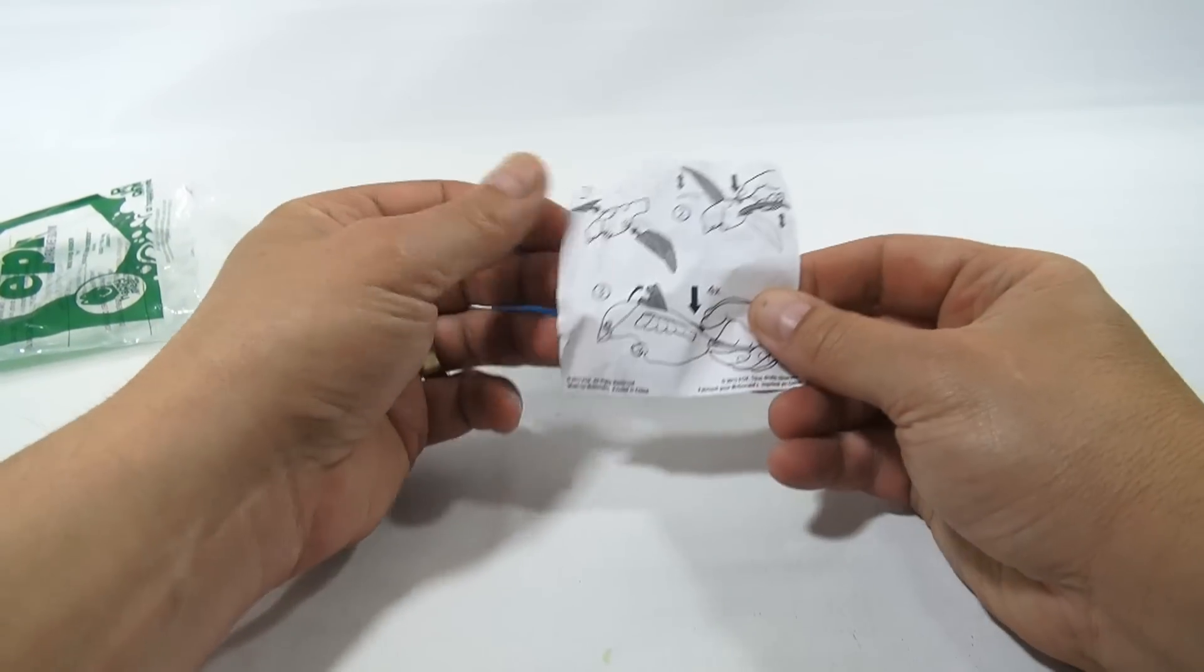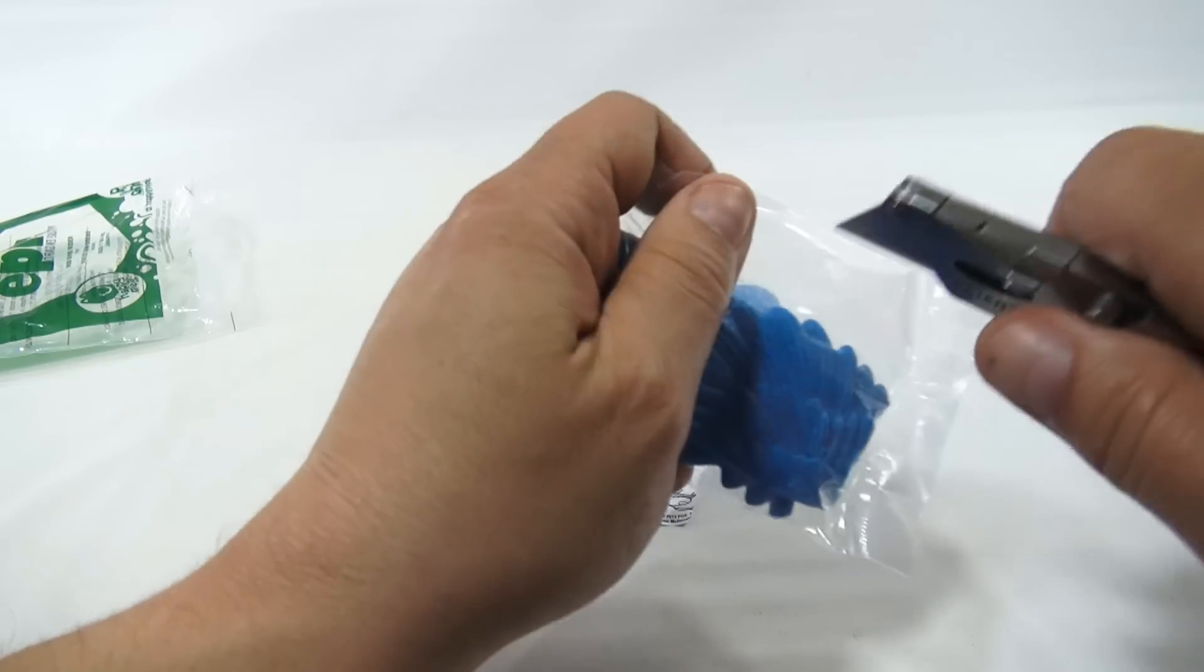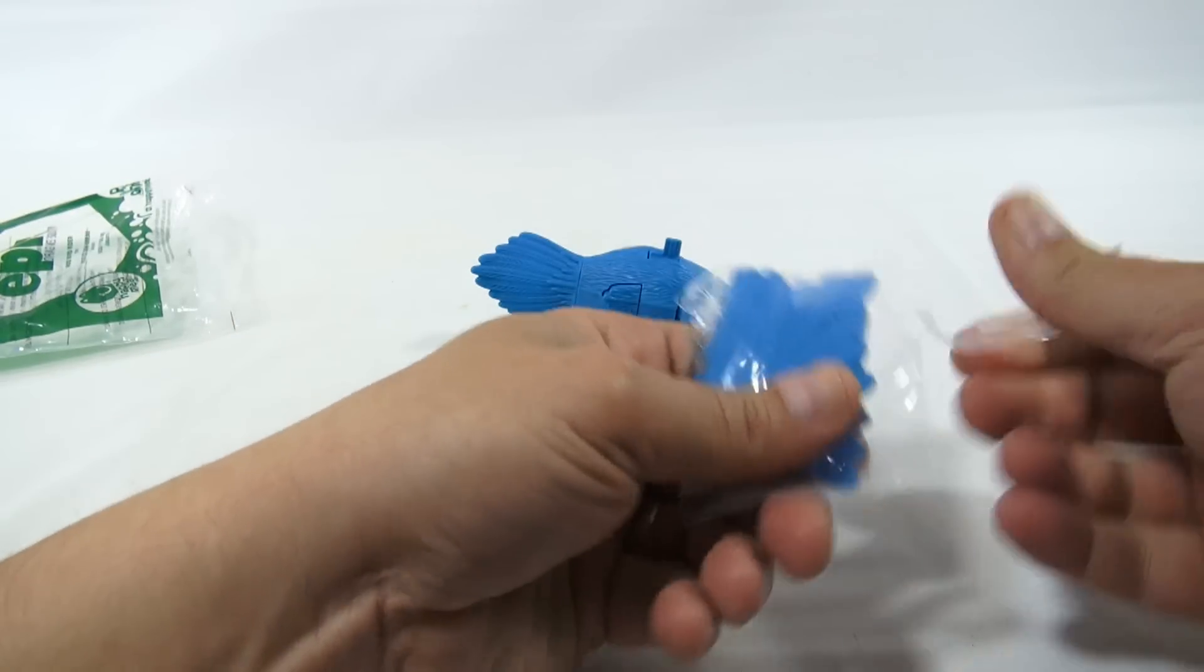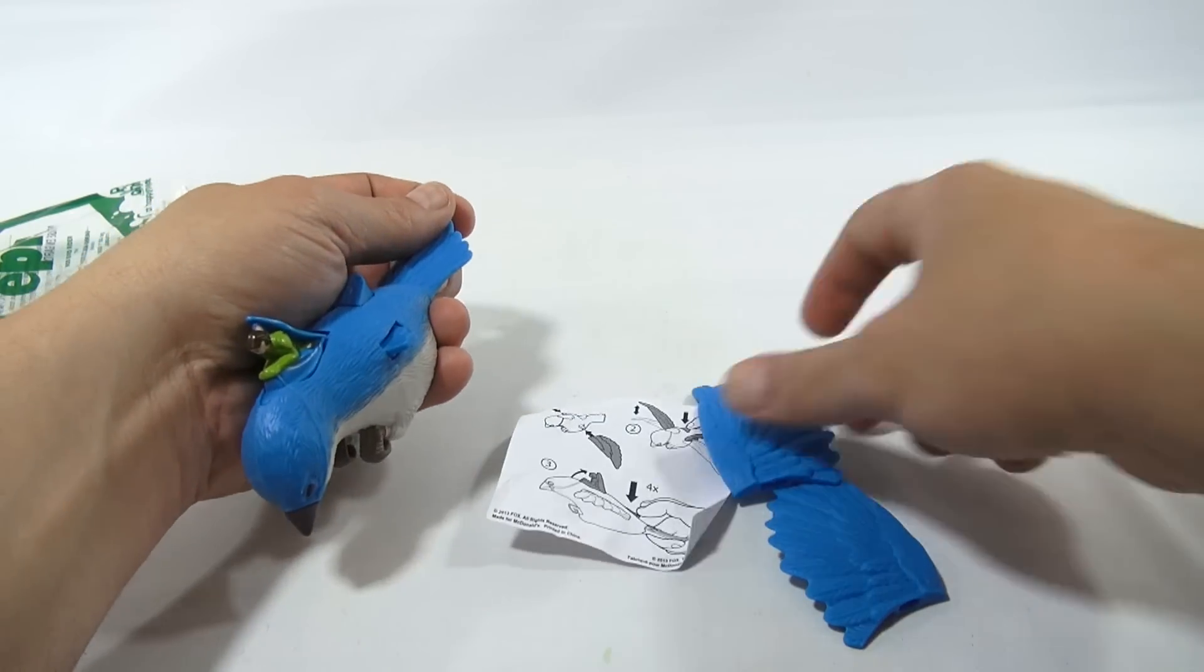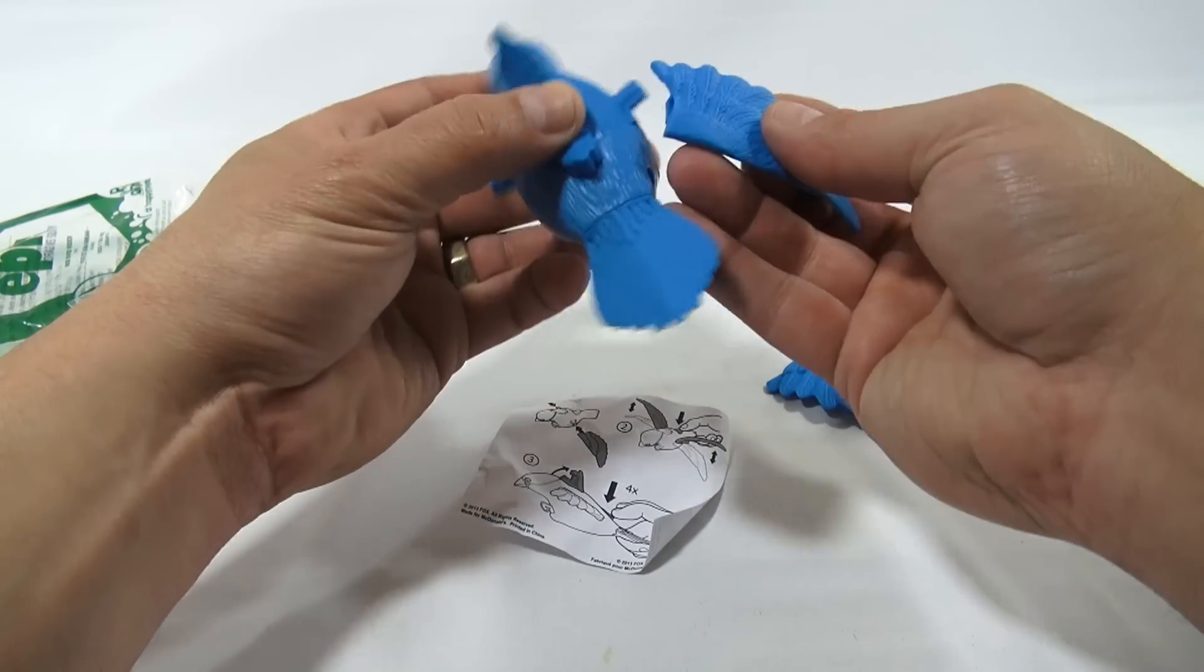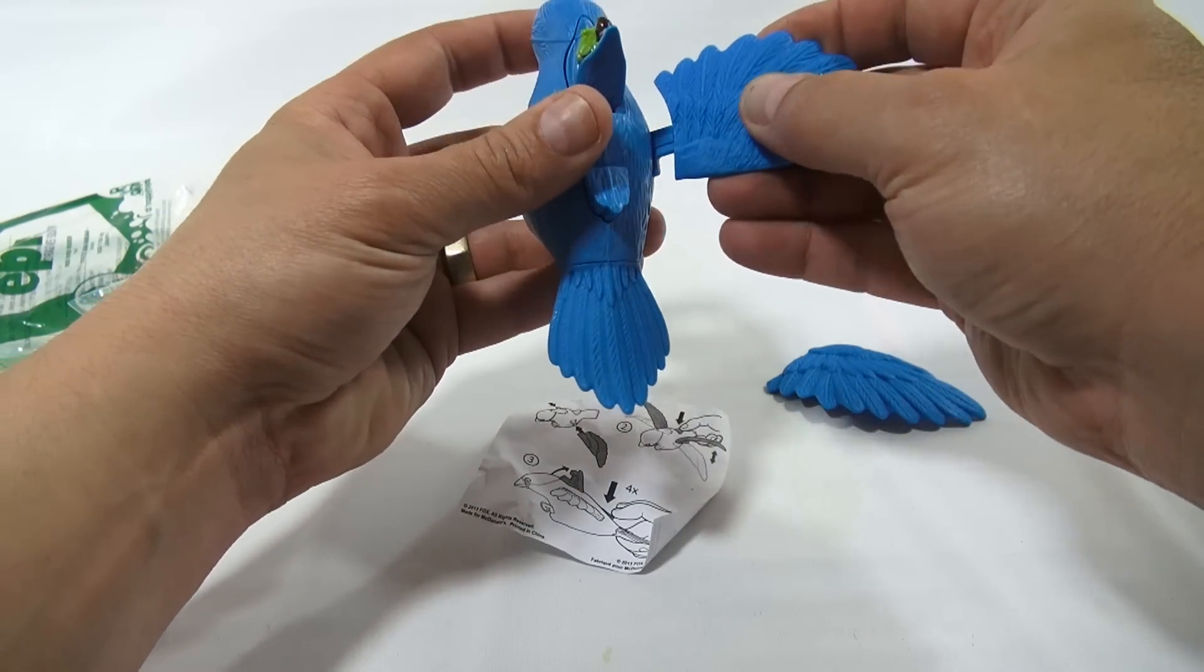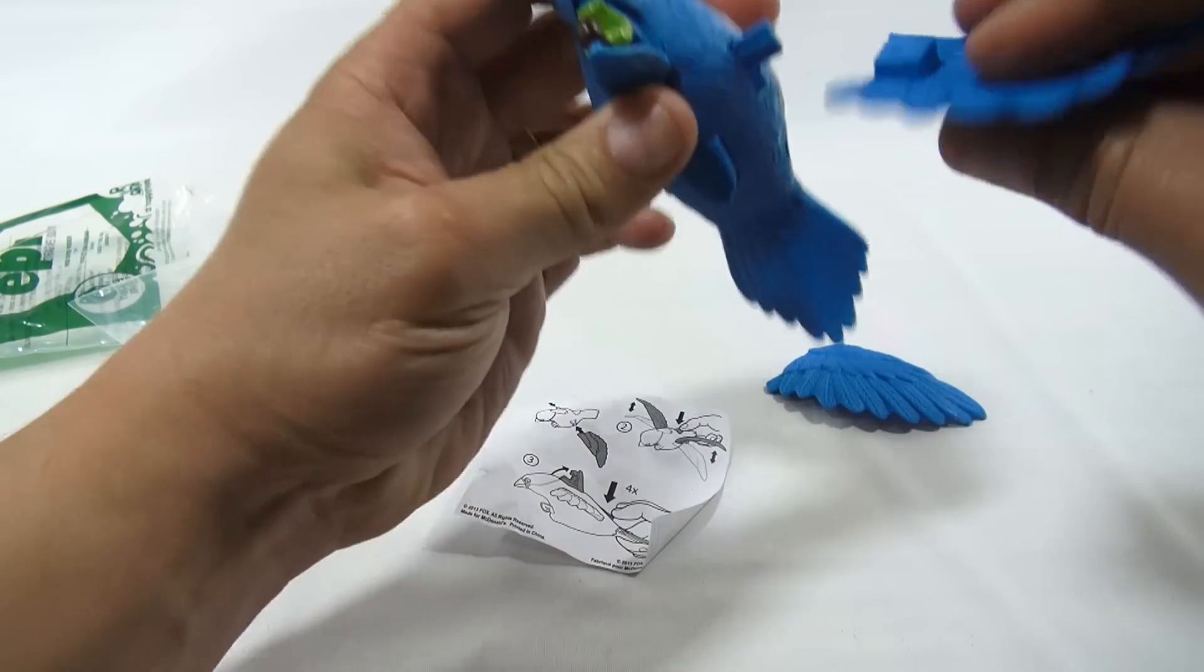So you put the wings on. It looks like this bird flies, so he flaps his wings. There's one wing that just slips right on, should just slip right on.